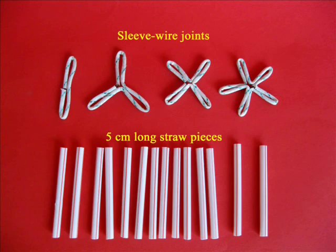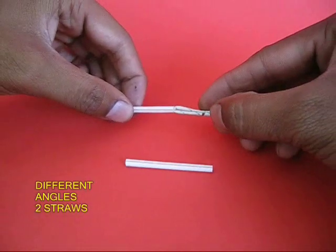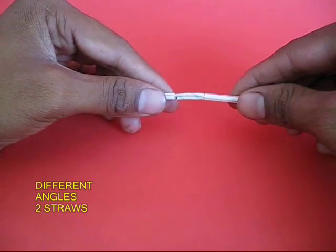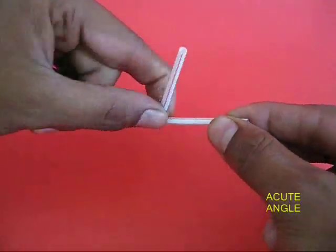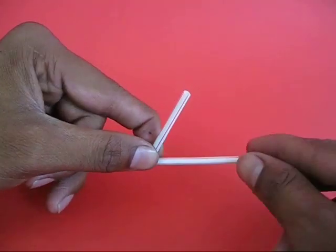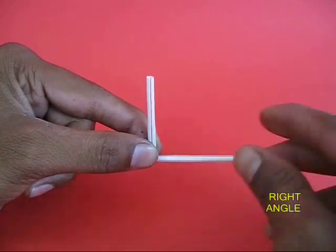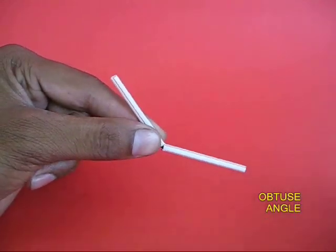Make lots of joints and cut straws to equal lengths. Now put a joint, join two straws with a joint to make an acute angle. Now make a right angle, then an obtuse angle.